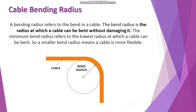A cable bending radius basically refers to the bend in a cable. If you see in the figure, this cable — which is colored in orange — is basically a cable which is going to be laid in a cable tray or maybe in a trench. You need to define what is the minimum cable bending radius at which this cable can be bent without damaging it.